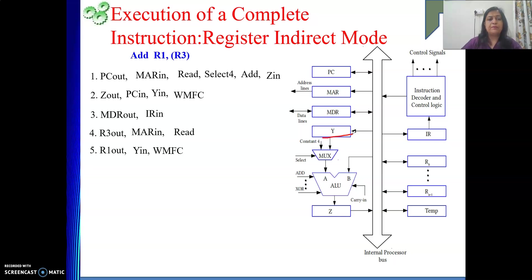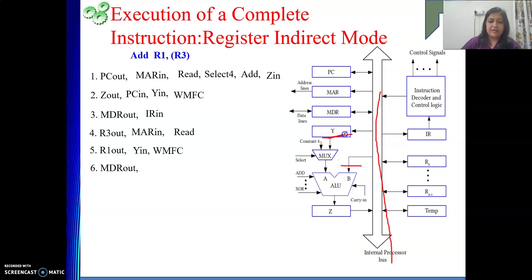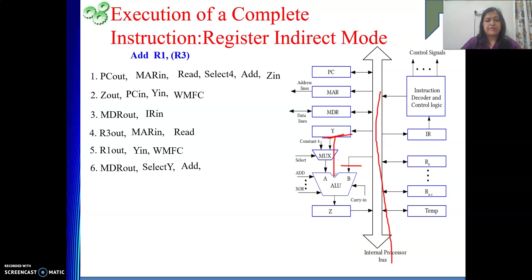Once we come out of WMFC, the data is in MDR. From MDR it has to go to the ALU, so MDR out — meaning it is on the bus, on the B input of the ALU. The other input is in Y register, so select Y brings it to the A input. Both inputs are now available. Now we perform the add operation, and the result is given to Z register (Z in).